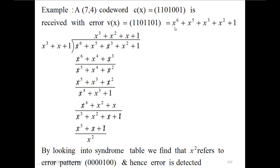The generator polynomial is x⁶ + x⁵ + x³ + x² + 1. The received term v(x) is divided by this generator polynomial.